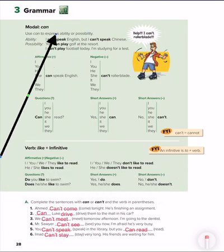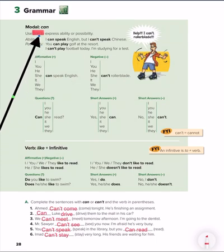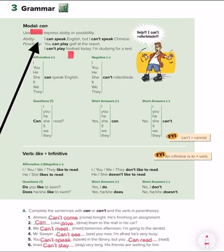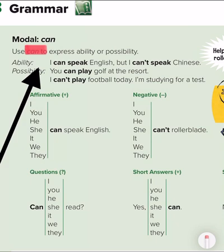Look, what can you see here? Modal can. So today, inshallah, we will learn how can we use can. We use can to express ability or possibility. So what does that mean? It means if you can do something. For example, I can swim. I can speak English. I can.